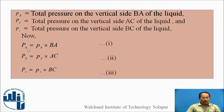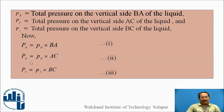Capital Px is the total pressure on the vertical side BA of the liquid. Capital Py is the total pressure on the vertical side AC of the liquid. Capital Pz is the total pressure on the diagonal side BC of the liquid. We calculate: capital Px equals small px times BA, capital Py equals small py times AC, and capital Pz equals small pz times BC.